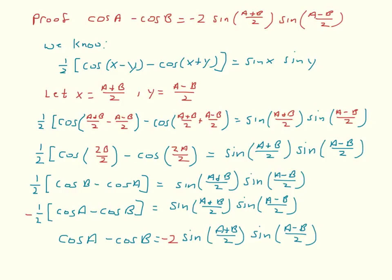Simplifying the arguments inside the cosines gives one-half times the cosine of 2b over two minus the cosine of 2a over two, which equals sine of a plus b over two, sine of a minus b over two. Reducing the fractions, that becomes one-half times the cosine of b minus the cosine of a, equals sine of a plus b over two, sine of a minus b over two.